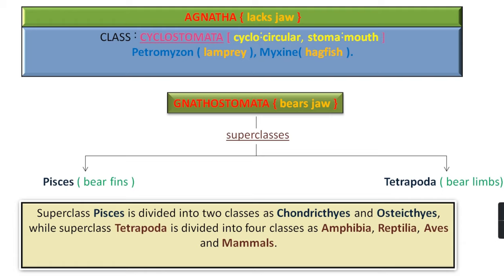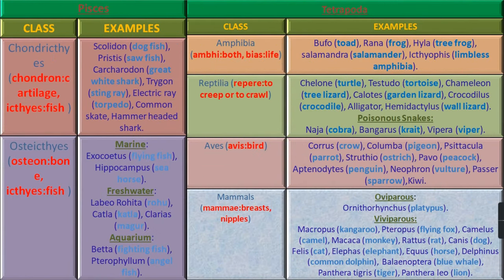Gnathostomata is a division of animals which bears jaw. It is divided into two superclasses: Pisces, which have fins, and Tetrapoda, which have limbs. Superclass Pisces is divided into two classes: Chondrichthyes and Osteichthyes. Class Chondrichthyes — where Chondron means Cartilage and Ichthyes means Fish — are cartilaginous fish. Examples are Scoliodon (Dogfish), Pristis (Sawfish), Carcharodon (Great White Shark), Trygon (Stingray), Torpedo (Electric Ray), Common Skate, and Hammerhead Shark.